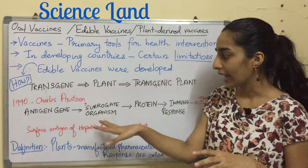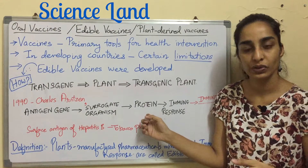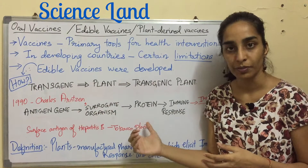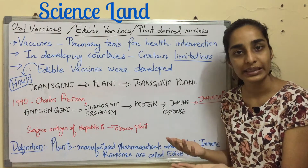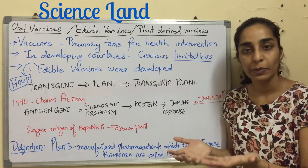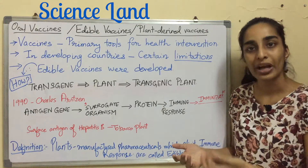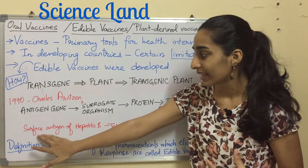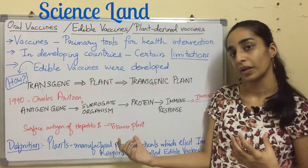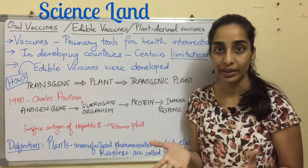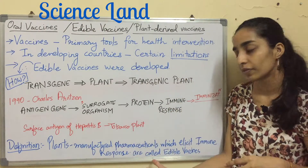In 1990, a person called Charles thought: instead of a transgene, if I use the antigen gene and incorporate it into a surrogate organism, that organism would produce the protein or antigen for me, and that protein could be used to elicit an immune response — which would be very helpful for immunization. So he produced the surface antigen of hepatitis B in a tobacco plant, and that was the first-ever edible vaccine.